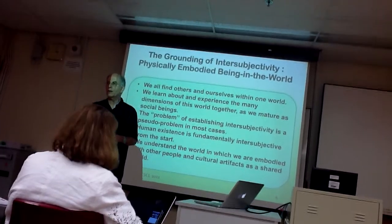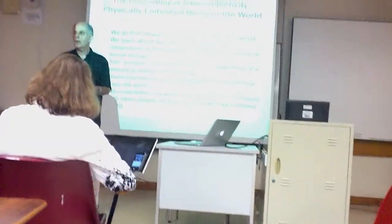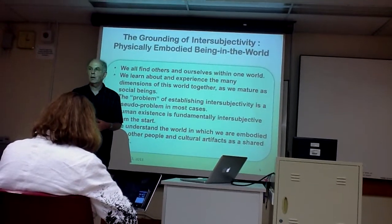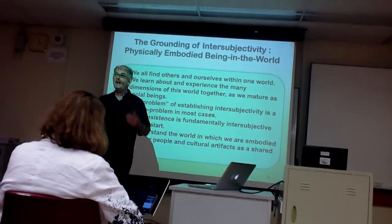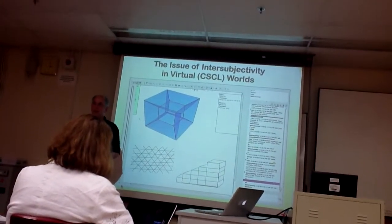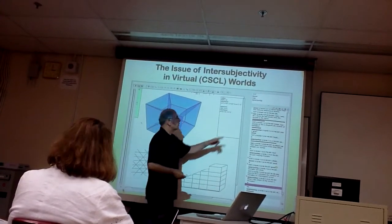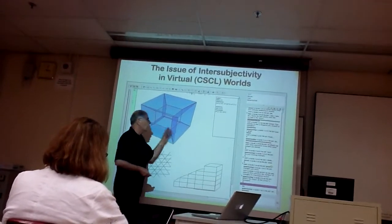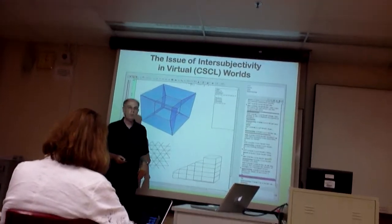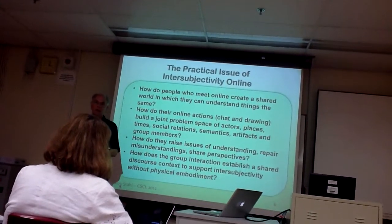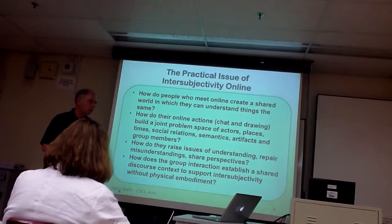It gets more complicated in CSCL, because we're not in the same shared physical world anymore. In this case, there are several students scattered around the world. They've never seen each other; they don't know anything about each other's physicality — not their gender, age, or what they look like. All they know is what shows up in the chat log. So how do they become part of a shared social world? We get this problem reappearing in this virtual world, where the representation of people is just their login name and whatever they happen to say in text chat or draw in the shared whiteboard. How does intersubjectivity get co-constructed in that kind of context — the paradigmatic context of CSCL?